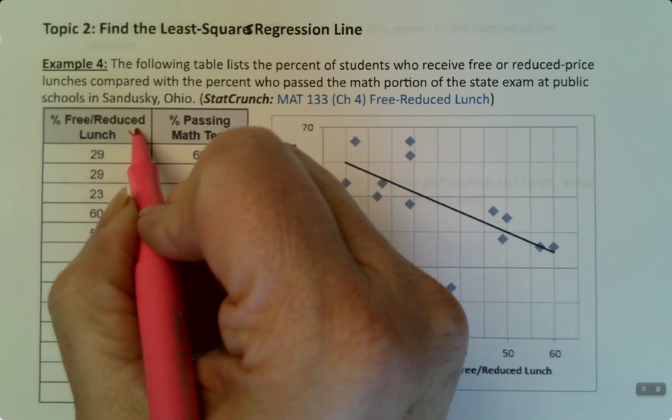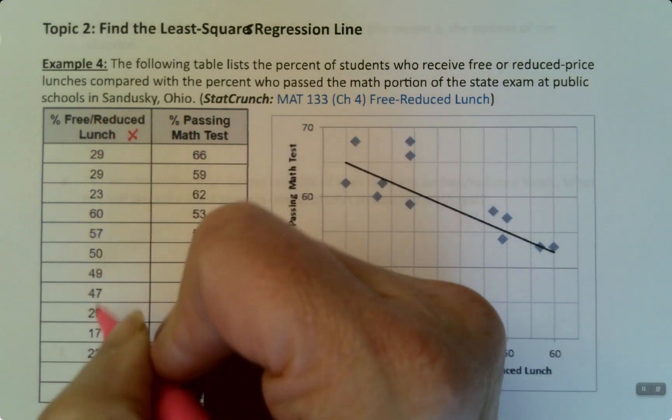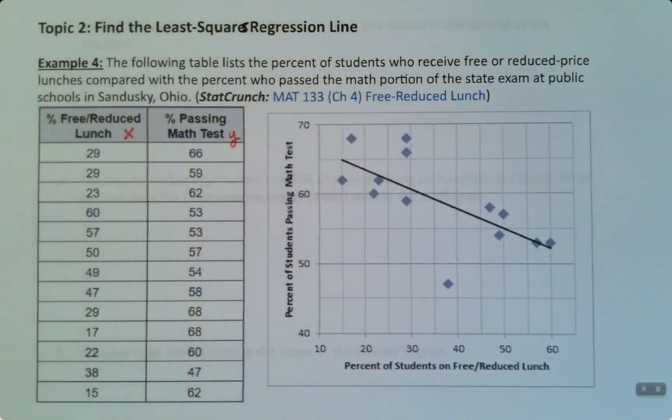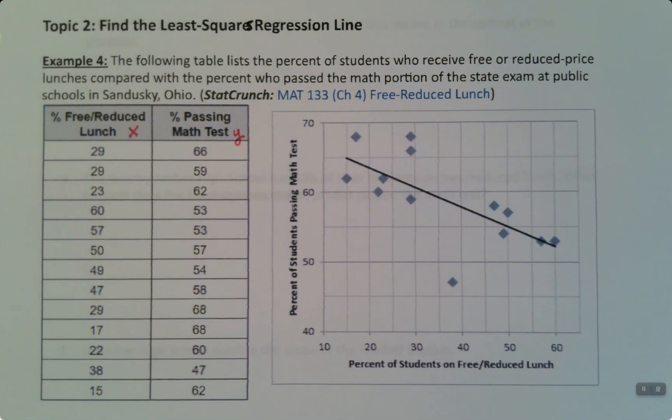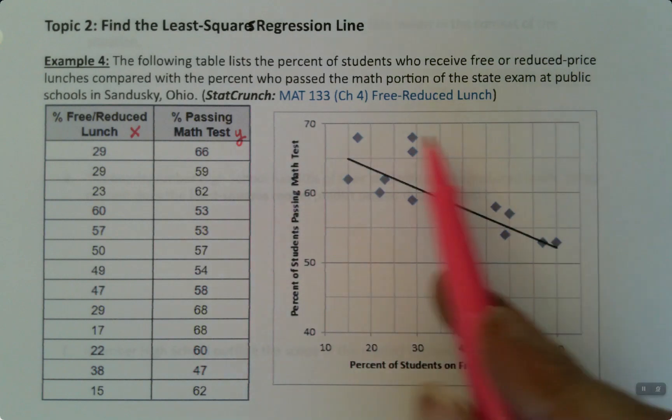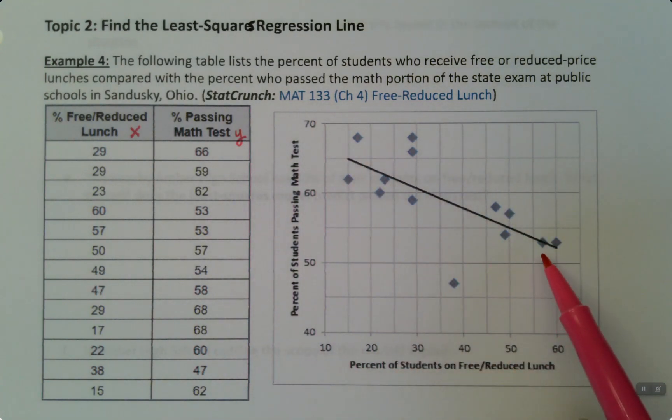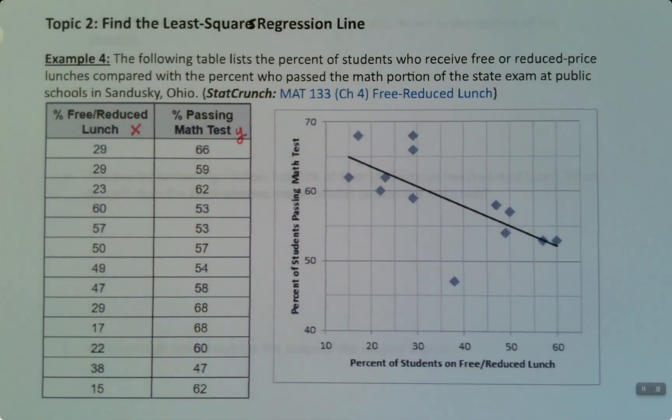Just a reminder, we always put X in the left-hand column and Y in the right-hand column, just kind of standard for our course. And here's the scatterplot and you can see the regression model right there, so we want to know how to find it.